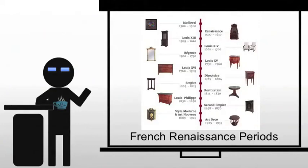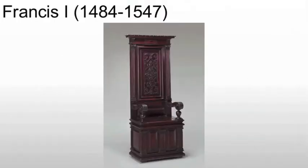Let's talk about the time frames we tend to see in the French Renaissance. There are three of them. The first is Francis I, or François I.